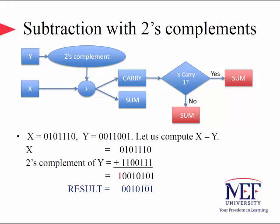Consider the example where x is 0101-1110 and y is 0011-001. We compute x minus y. The two's complement of y is 1100-111. Performing the addition, we get a carry of one and the sum value. Since the carry is one, the result is the sum itself without a negative sign.